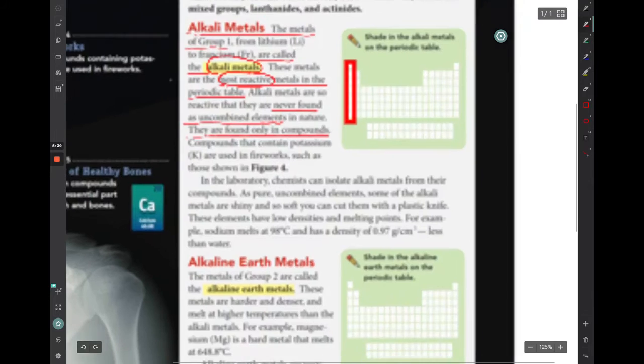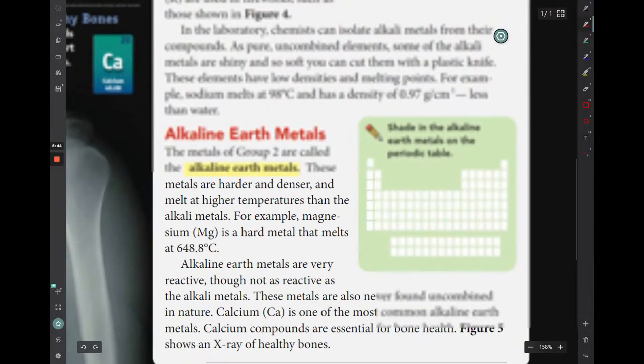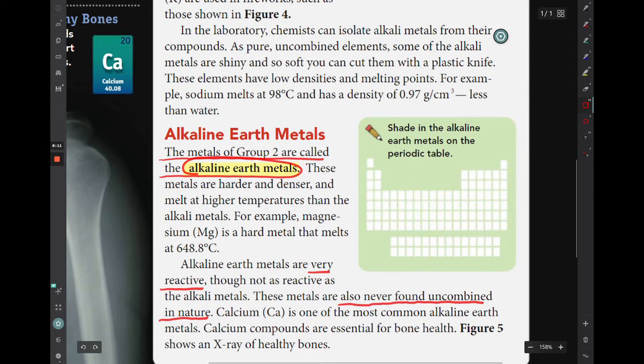The next column are what we call the alkaline earth metals. So the metals that are in group 2 are called the alkaline earth metals. They also are very reactive, but they're not quite as reactive as the alkali metals. They also are never found uncombined in nature. They will only be combined with other elements in compounds. So that would be group 2 on your periodic table.